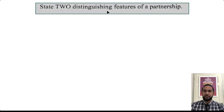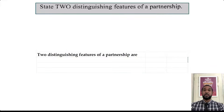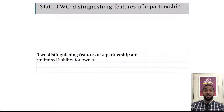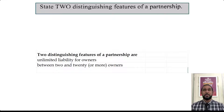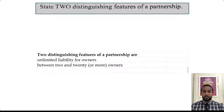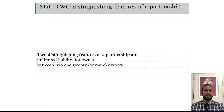The first thing it says is: state two distinguishing features of a partnership. There's a whole list but I'll give you a couple. First, unlimited liability for owners — although you can have limited partners, one partner in a partnership must always have unlimited liability. Second, between 2 and 20 or more owners. In some cases you might also say there is more capital available than in a sole trader. If you have any interesting features, put them in the comments below and I might pin the best list.